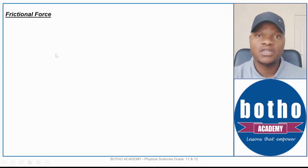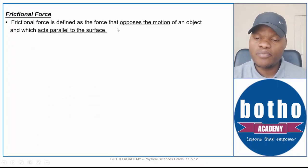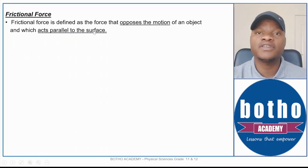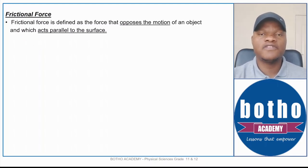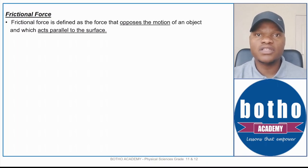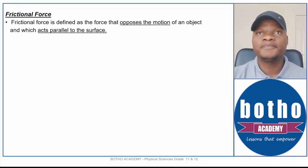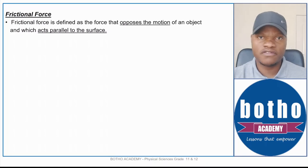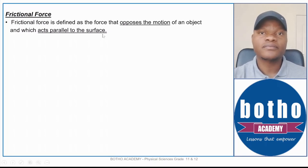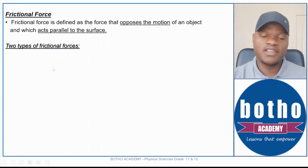The next force is the frictional force, which opposes the motion of an object and acts parallel to the surface. Just like the normal force, friction is present when there is a surface and an object in contact with it. However, unlike the normal force which acts perpendicular to the surface, the frictional force acts parallel to the surface.